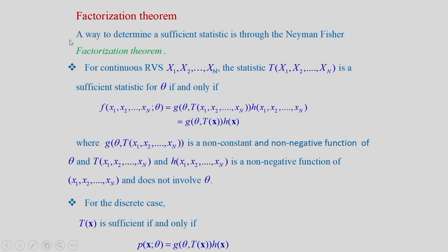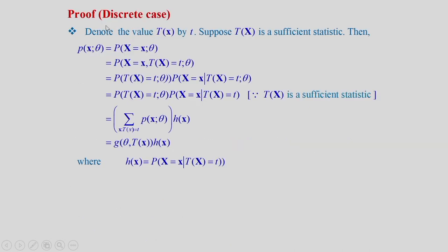For the discrete case, we consider the condition in terms of the joint PMF: T(X) is sufficient if and only if the joint PMF P(X; theta) is a product of Z(theta, T(X)) * H(X), where Z and H are defined as before. We will prove this for discrete random variables X1, X2, ..., Xn.